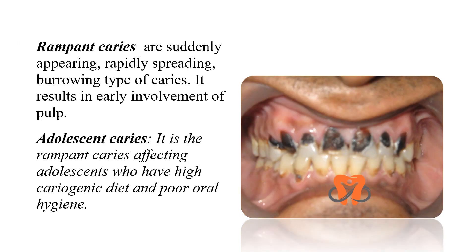Rampant caries is also a type of acute caries — a suddenly appearing, rapidly spreading, burrowing type of caries that results in early involvement of the pulp. Adolescent caries is rampant caries affecting adolescents who have a high cariogenic diet and poor oral hygiene. You can see how badly it has affected the teeth, with almost all teeth — including anteriors and lower teeth — affected.